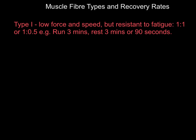The reason the rest period can be short for Type 1 training is that muscle fiber damage is not associated with low-intensity endurance training. If you go for long, low-intensity runs, you're not causing damage to the muscle fibers like you do with high-intensity work. So rest and recovery can be much shorter. Typically in an endurance training program you might do three minutes of running with three minutes rest, repeating that ten times over the course of an hour.